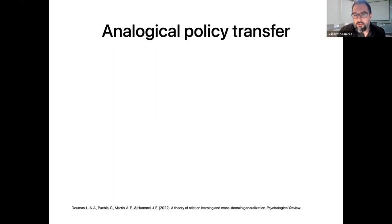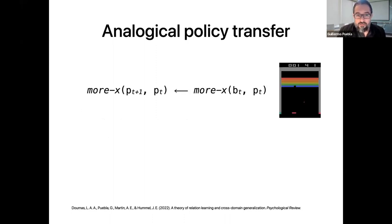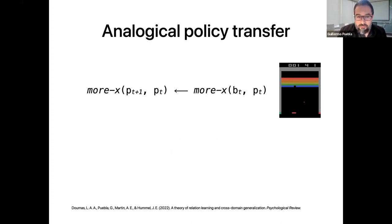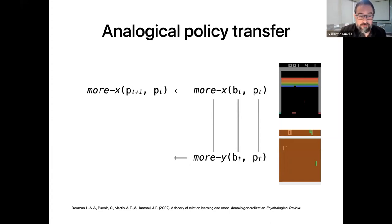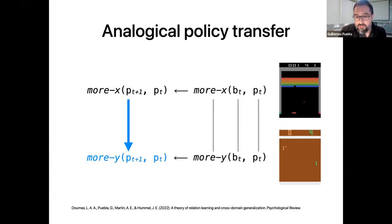Analogy-making allows us to go beyond establishing correspondences between objects. When playing Breakout, a person can learn that if the ball is to the right of the paddle, one should move to the right — shown here in logic notation. If the same person plays Pong for the first time, she will notice the similarity between the red paddle in Breakout and the green paddle in Pong, as well as the ball in both games. She will also notice the similarity between the ball-paddle relationship across games: the more-y relation in Pong is like the more-x relation in Breakout. Through analogical inference, this person could predict the correct action in Pong even before scoring or losing any points.